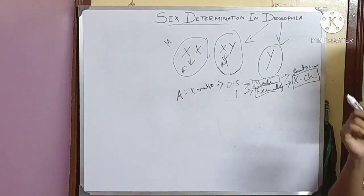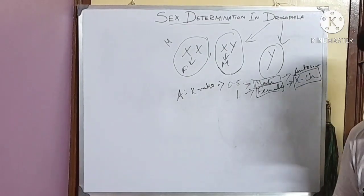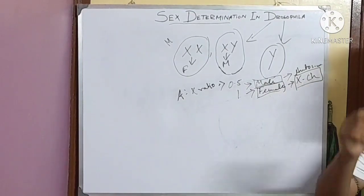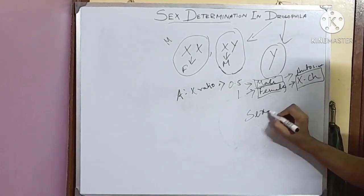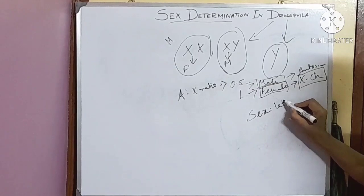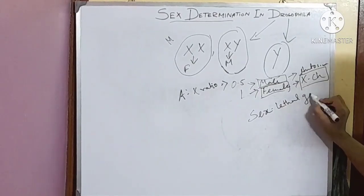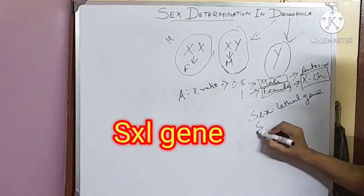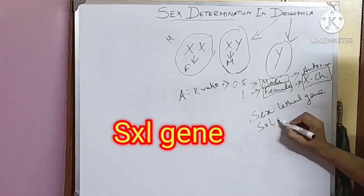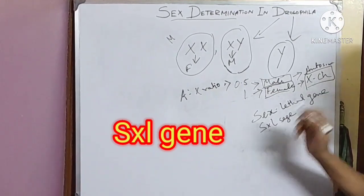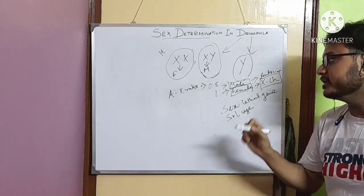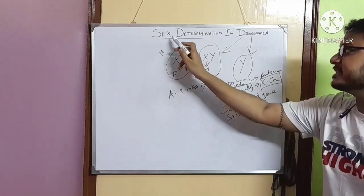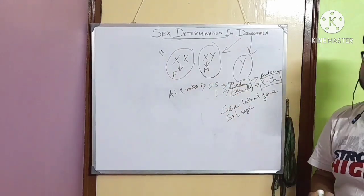These genes are called the sex switch genes and they are named as sex lethal gene, that is SXL gene. It is very important. Now, let's move to the molecular basis of this sex determination in Drosophila.